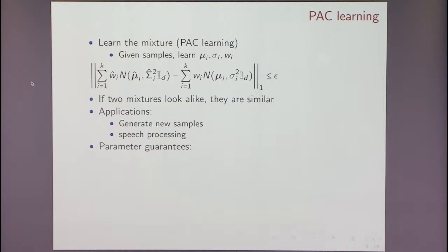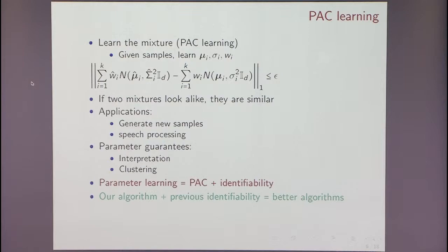If you think about it from an application perspective, for many problems this is enough. For example, if you want to generate new samples, all you care about is learning a mixture which looks like whatever training data you had. But I'm not saying parameter learning is not important. So it's really important if you want to interpret your data. But what we know is parameter learning can be thought of as a combination of learning plus an identifiability result.